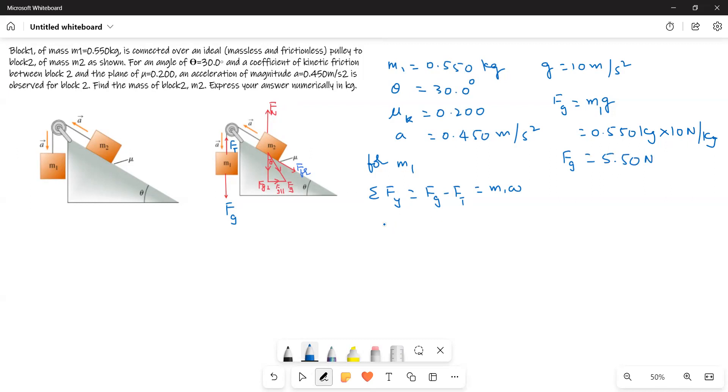So Ft is equal to 5.5 newtons minus M1 is 0.550 times 0.450. This gives a value of 5.25 newtons. That means this is the tension, Ft.